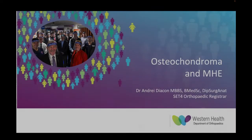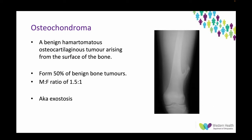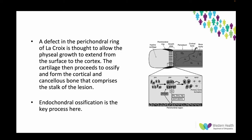My presentation today is on osteochondroma and multiple hereditary exostoses — a common one that comes up in the exam. Osteochondroma is a benign hamartomatous osteocartilaginous tumor arising from the surface of the bone. It forms about 50% of benign bone tumors and has a male-to-female ratio of about 1.5 to 1. It's also known as an exostosis, hence MHE, which we'll talk about later.